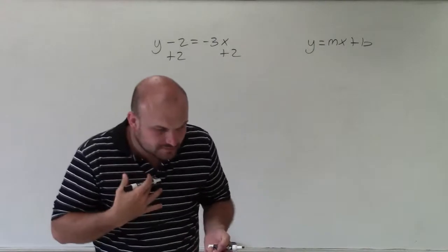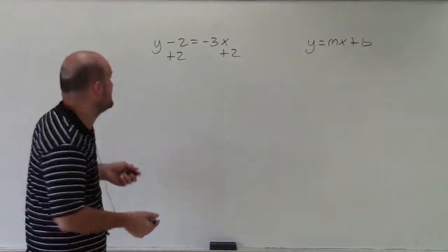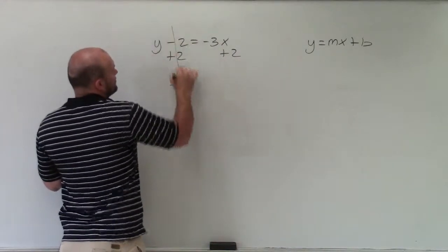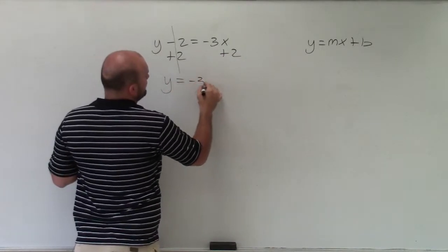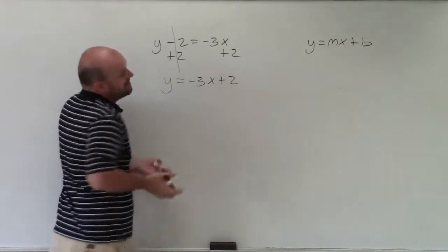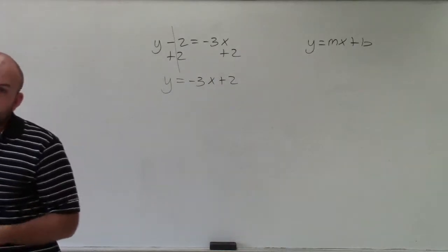So essentially, what I'm doing is solving for y. Well, negative 2 plus 2 goes to 0. So I'm left with y equals negative 3x plus 2. I cannot combine them because they're not like terms.